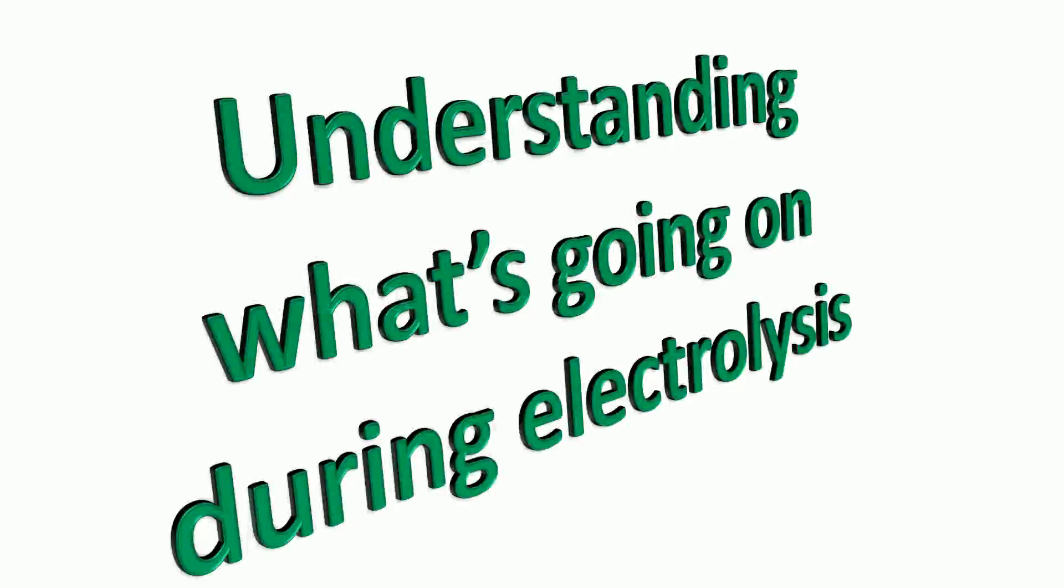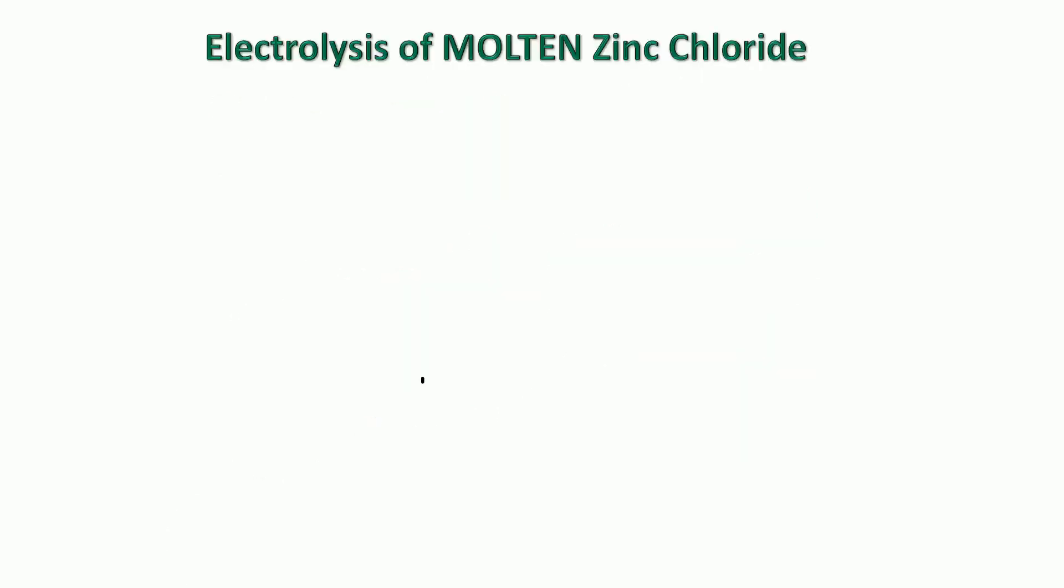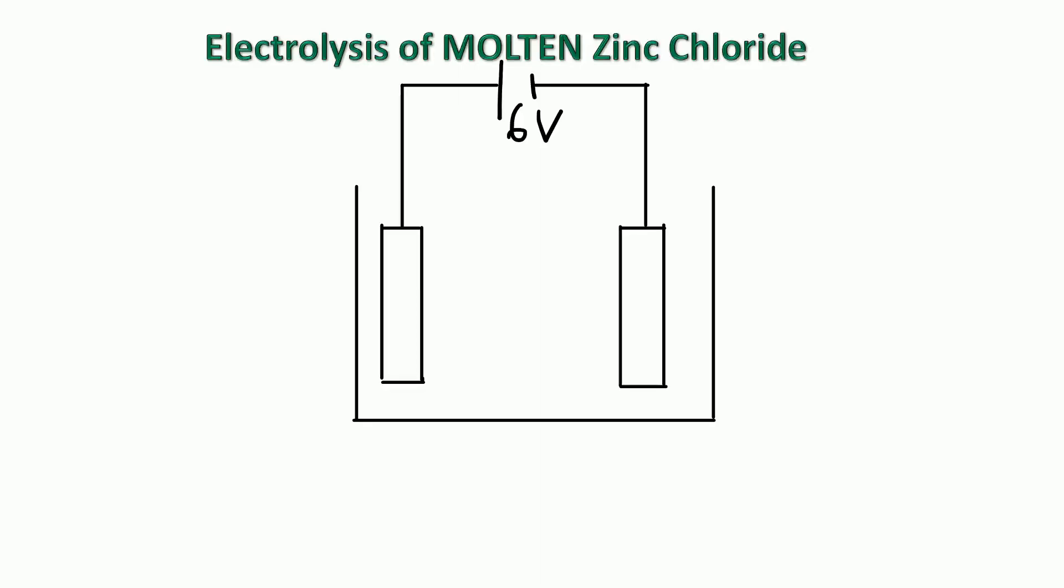Now we're going to try and understand what's going on during electrolysis. Let's take the example we've just seen in the practical activity which was the electrolysis of molten zinc chloride. So here's the electrolysis cell we've got two electrodes connected to a power supply. And the liquid once it's melted into a liquid we call that the electrolyte and that's just a liquid containing ions.